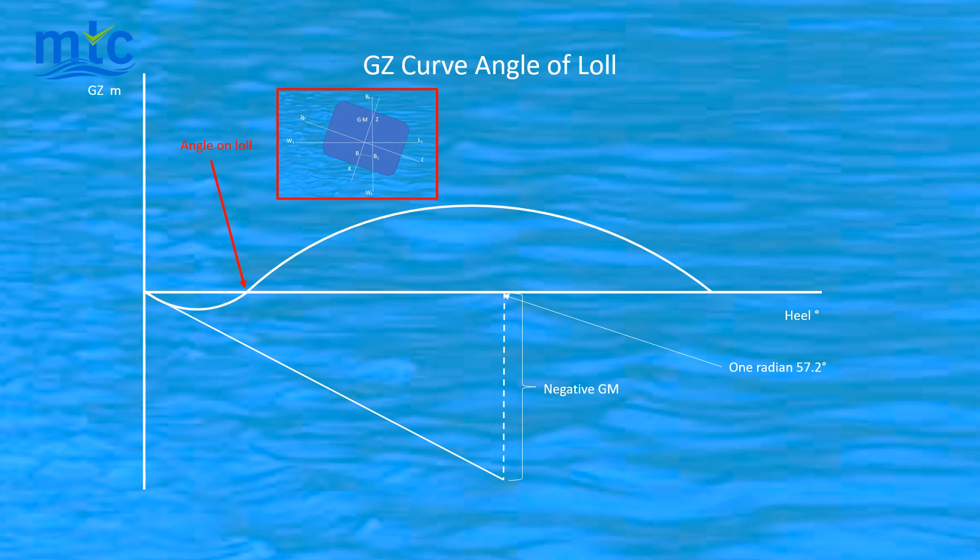As the vessel is heeled, it will settle to an angle of loll. This is where the GZ curve crosses the horizontal axis. The diagram in the red box shows there is no righting lever.